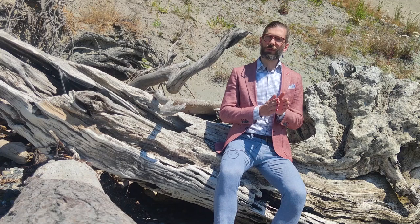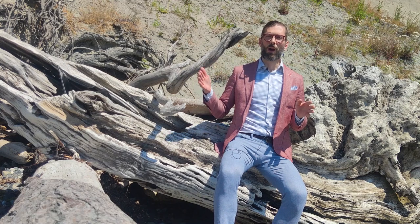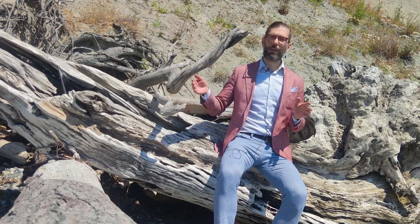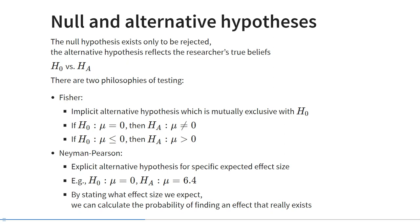It's very important to talk about two different philosophical approaches to testing, which are often mixed and confused in the social sciences. The oldest approach is Fisher's. He wasn't really concerned with alternative hypotheses — he only talked about null hypotheses. In Fisher's perspective, the alternative hypothesis is any state of the world mutually exclusive with the null hypothesis. So if our null hypothesis is that the mean equals zero, the implicit alternative hypothesis is that the mean is not equal to zero.